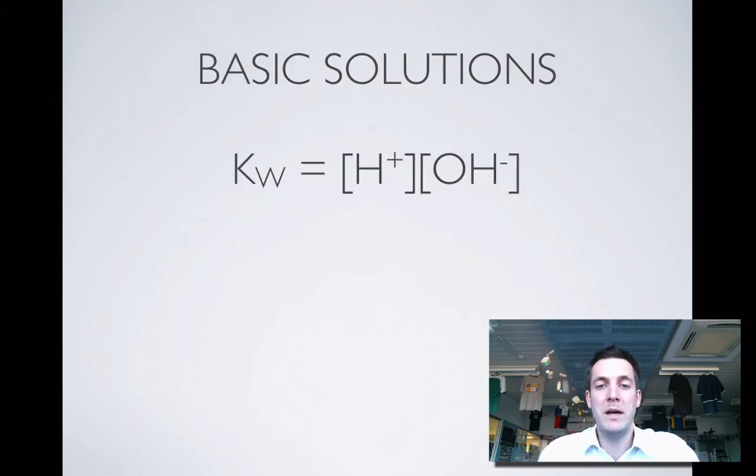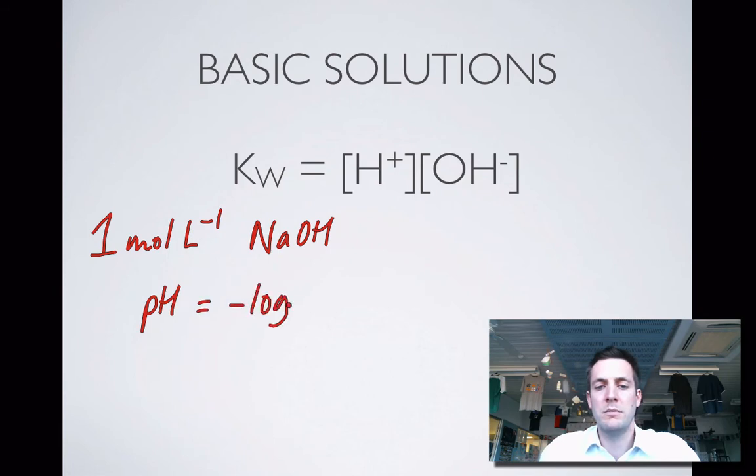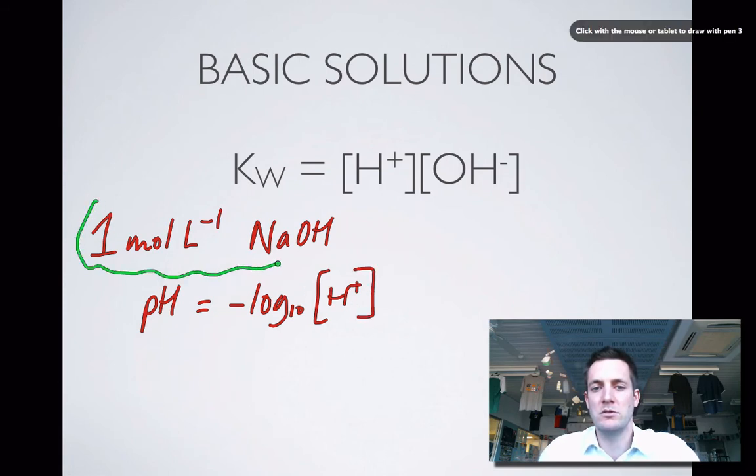With basic solutions it's a little bit more complicated because usually we're told the concentration of the base. Let's say I've got one mole per liter sodium hydroxide. If I'm asked to find the pH of that solution, that equals minus log to the base 10 of the H plus ion concentration, but I don't know the H plus ion concentration from this.